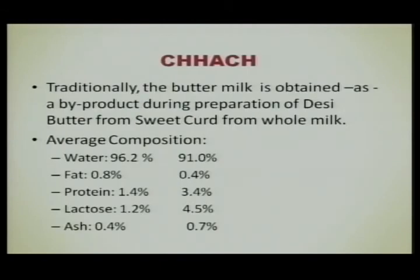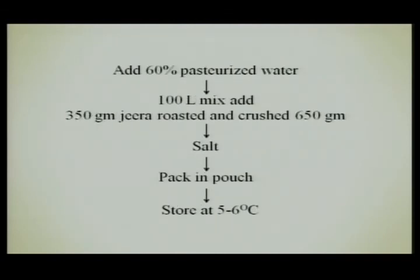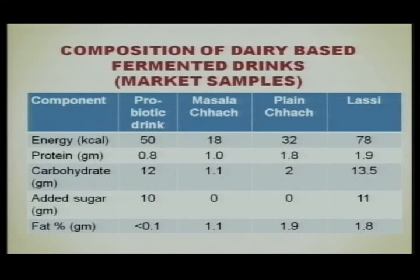Chach is also an important and increasingly popular product. In the traditional method it was prepared from sweet curd, but now toned milk is used. The process involves heating toned milk to 90°C, cooling to 40°C, adding culture at 43°C, then adding 60% pasteurized water to make this product. Both plain chach and masala chach (with jeera) can be prepared. Composition varies: protein in probiotic drink is about 0.8%, masala chach 1.1%, plain chach 1.8%, and LSC 1.9%. Carbohydrates are higher in LSC and probiotic drink due to added sugar.